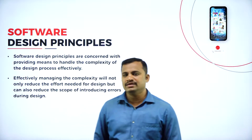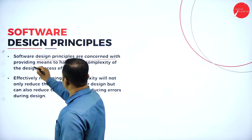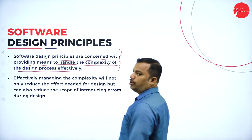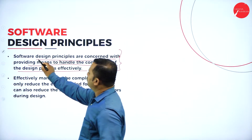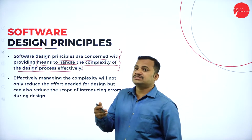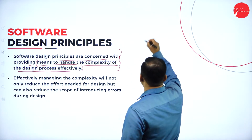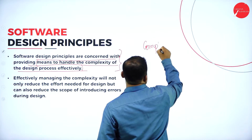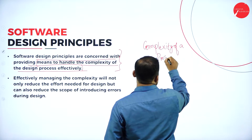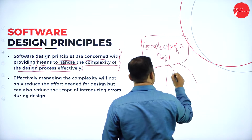What is the meaning of designing a software? The software design principles are concerned with providing means to handle the complexity of the design process effectively. How does the system effectively handle the complexity of a project? The complexity of a project is divided into different modules — module 1, 2, 3 and so on.